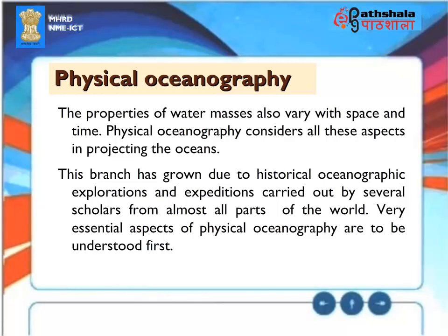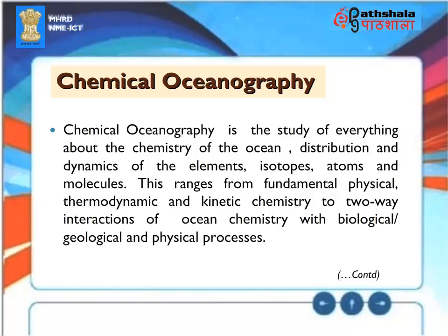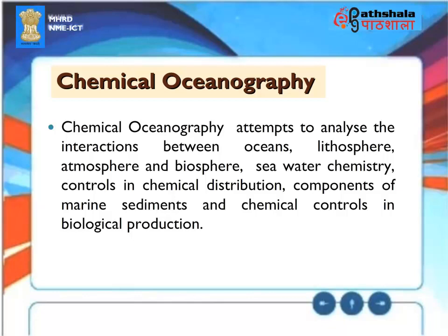Very essential aspects of physical oceanography are to be understood first. Chemical oceanography is the study of everything about the chemistry of the ocean — distribution and dynamics of the elements, isotopes, atoms, and molecules. This ranges from fundamental physical, thermodynamic, and kinetic chemistry to two-way interactions of ocean chemistry with biological, geological, and physical processes. Chemical oceanography attempts to analyze the interactions between oceans, lithosphere, atmosphere and biosphere, seawater chemistry, controls in chemical distribution, components of marine sediments, and chemical controls in biological production.